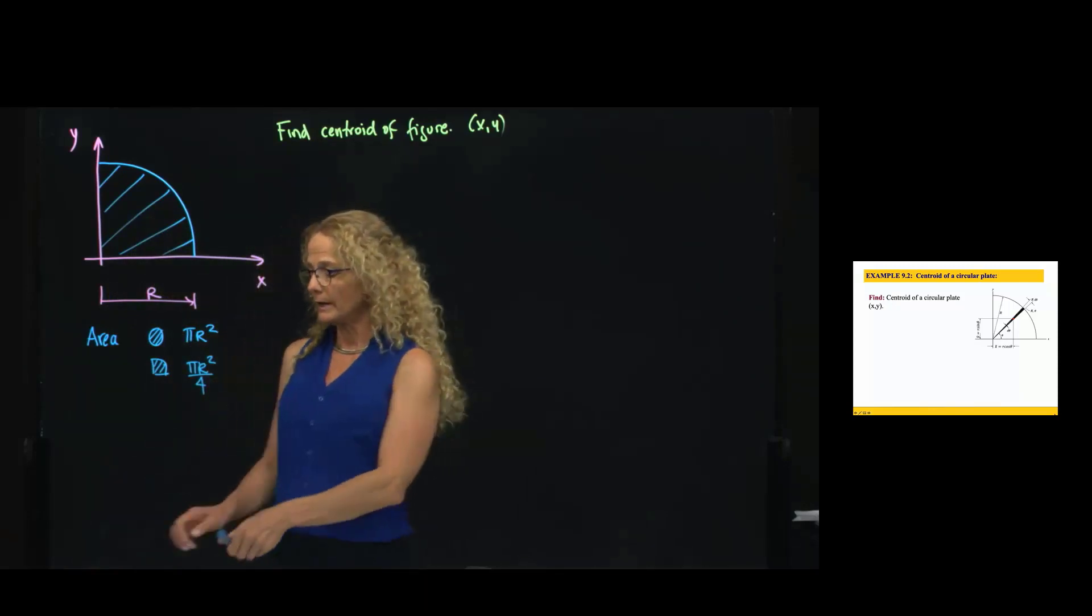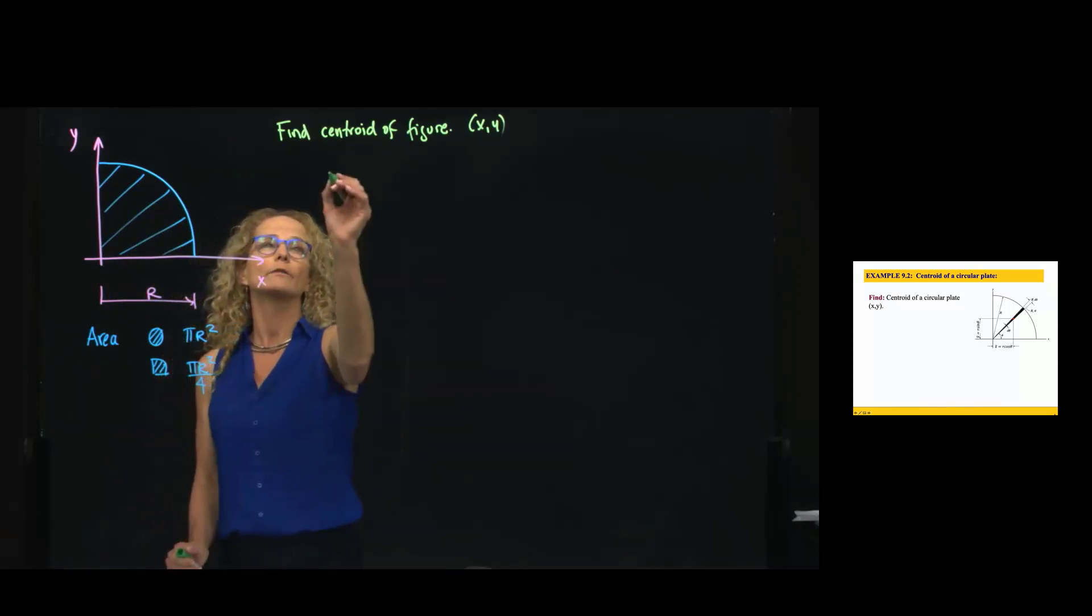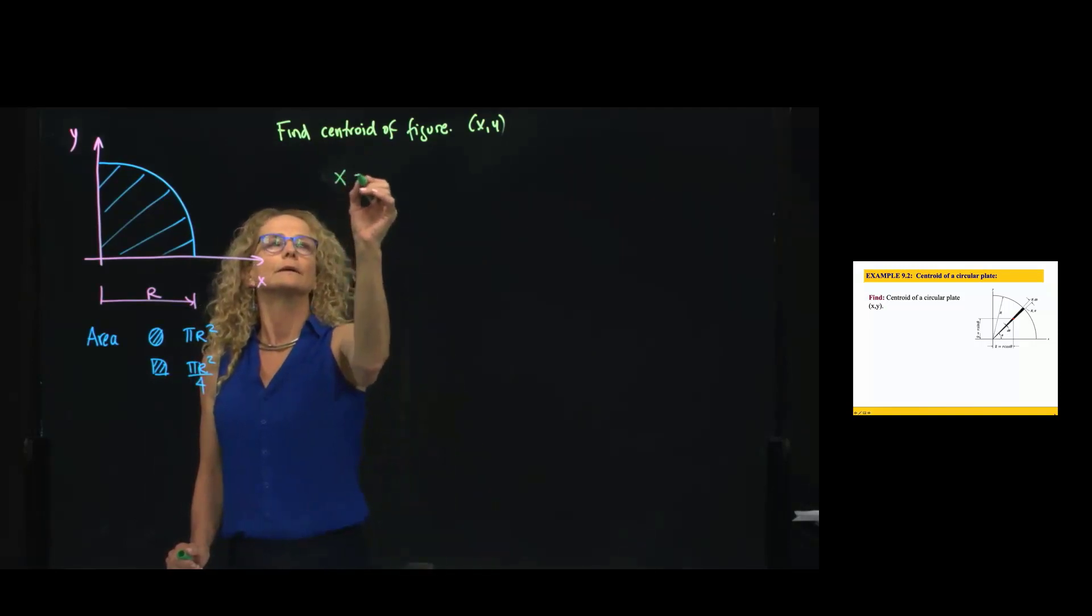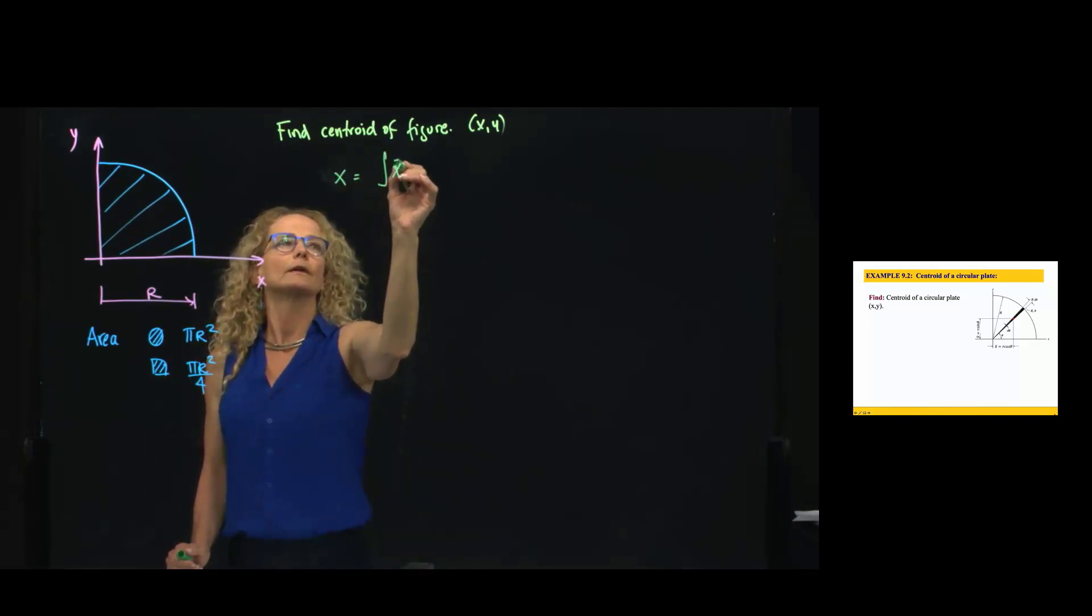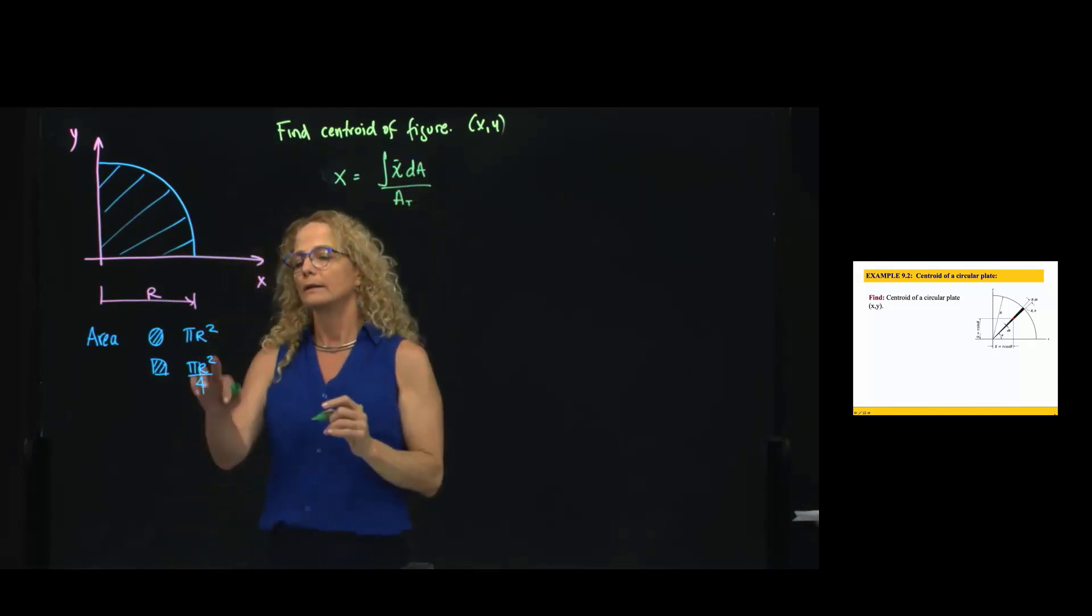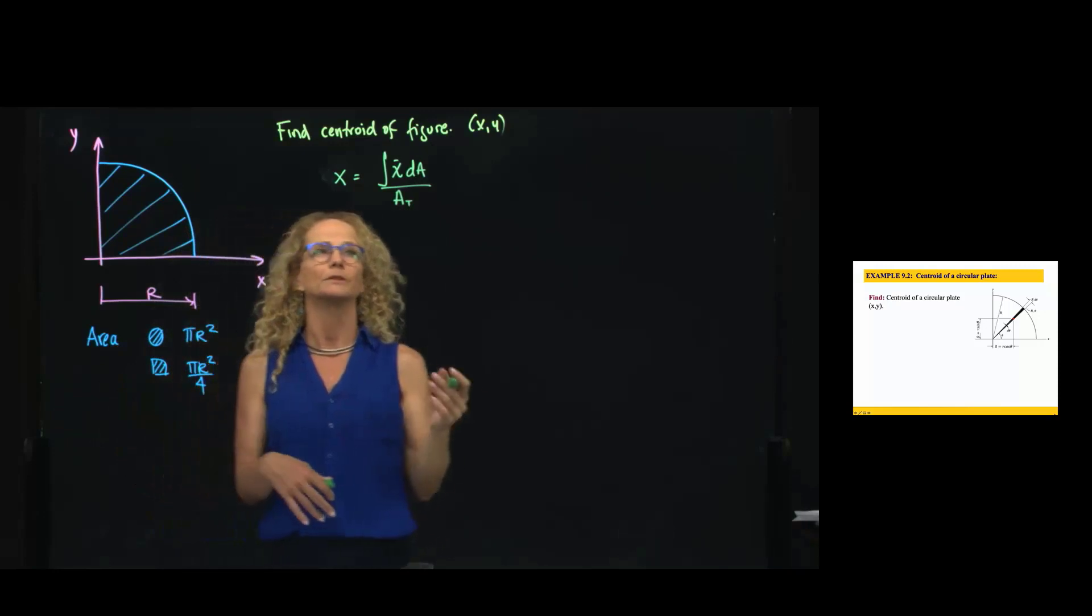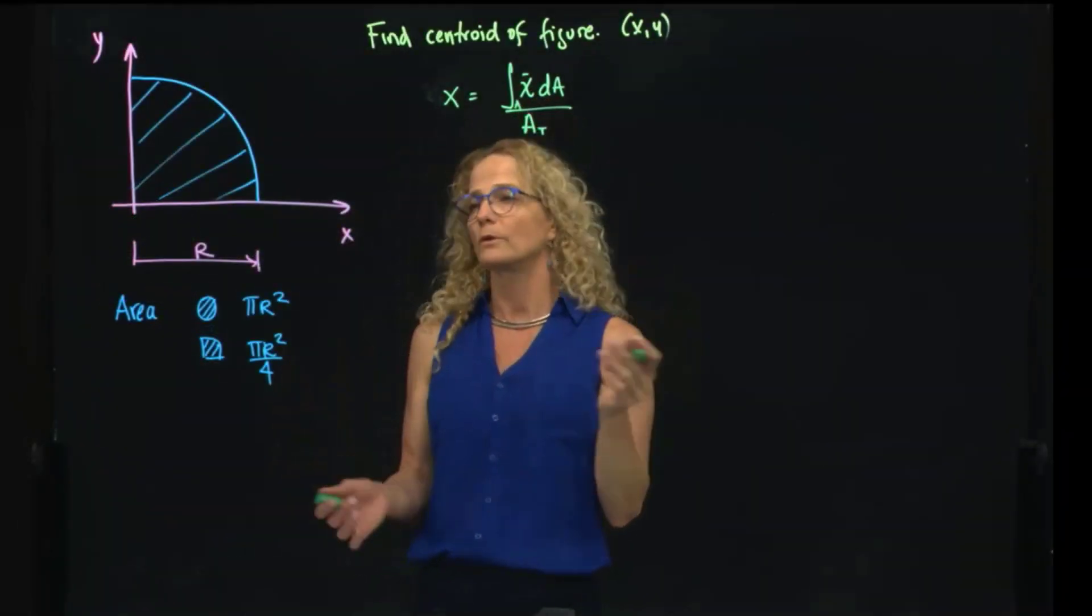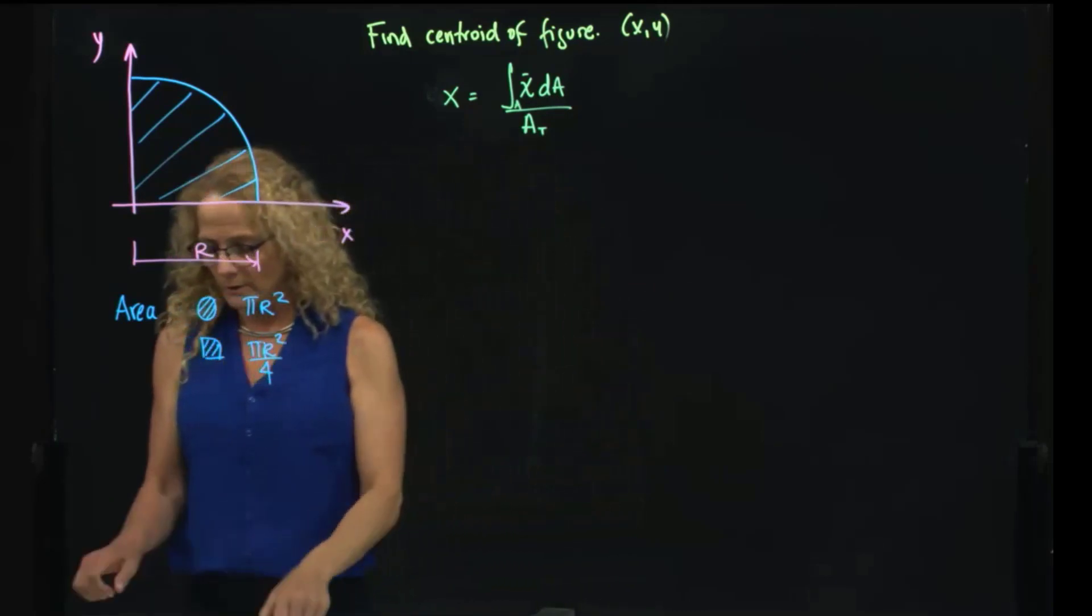In order to find the centroid, we have to use the definition of centroid, which is x equals the integral of x dA over the total area. And the total area, we already know how much it is. So x, this is an integral over the area, therefore it's a double integral.